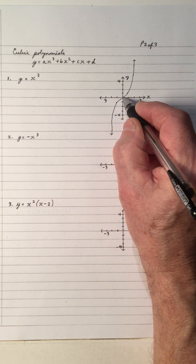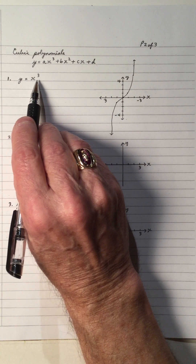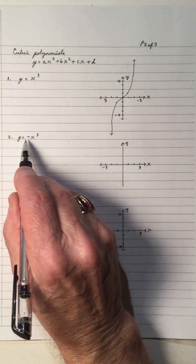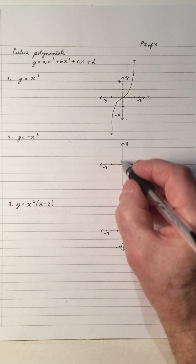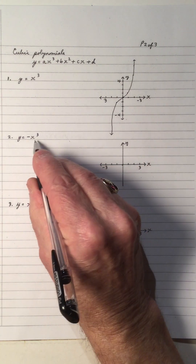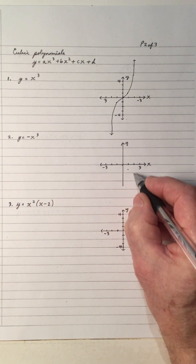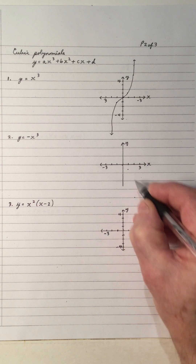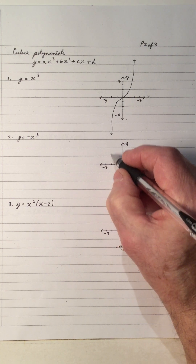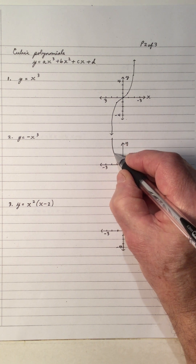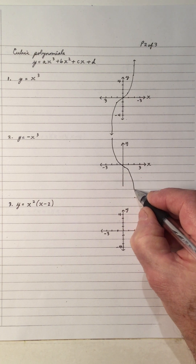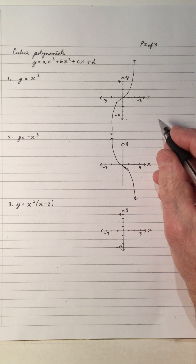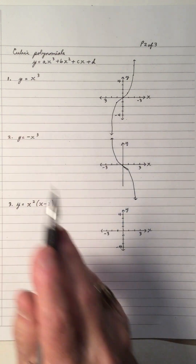Notice that y equals x cubed only has one x-intercept at 0. A cubic can have 3 x-intercepts, or 2 x-intercepts, but it has to have at least one. Now, negative x cubed is a reflection of this one. When x is 1, y is negative 1; when x is 2, y is negative 8; when x is negative 1, y is 1. So it's reflected in the x-axis. Again, only one x-intercept at 0.